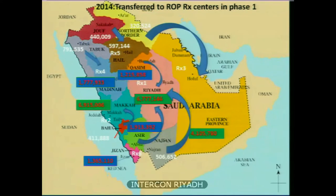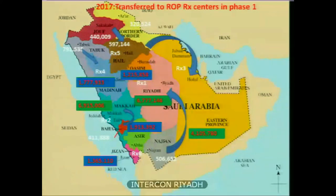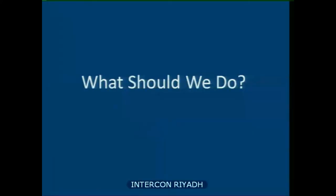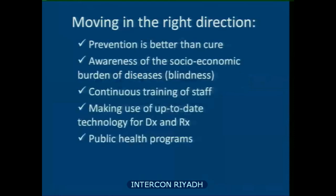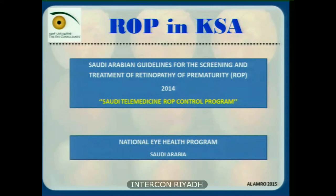A 14-page national guideline for ROP screening was developed with international advisors, distributed to the Ministry of Health for distribution to neonatal centers. It covers timing of first screening, treatment criteria, follow-up, parent support, and referrals. Anyone interested can email me for a soft copy.